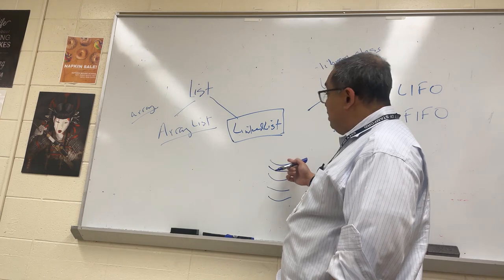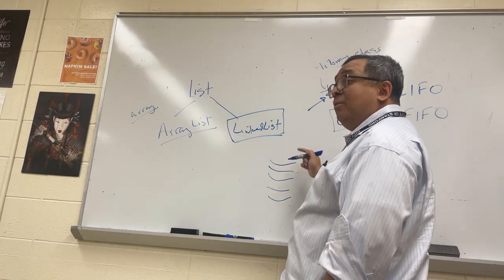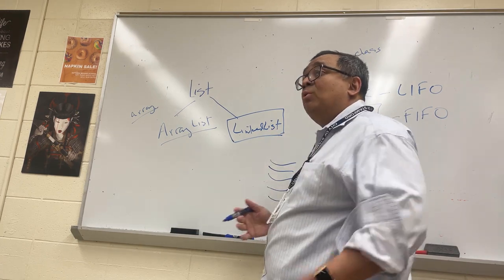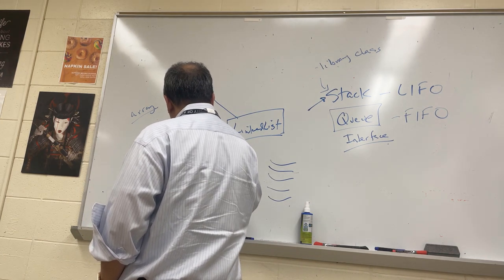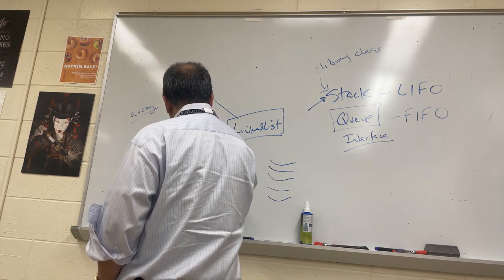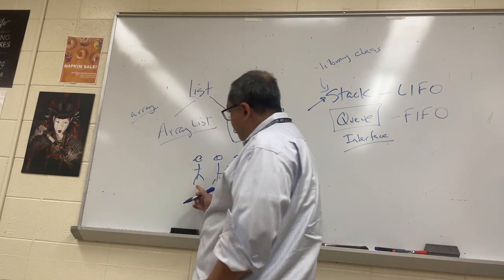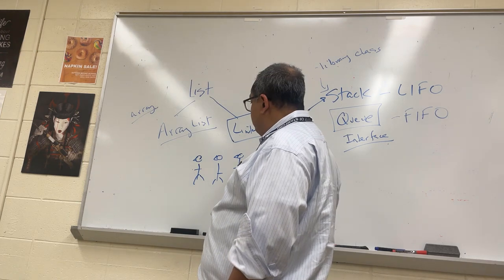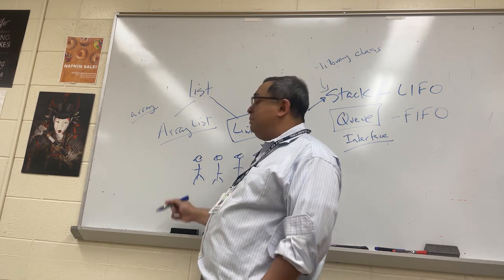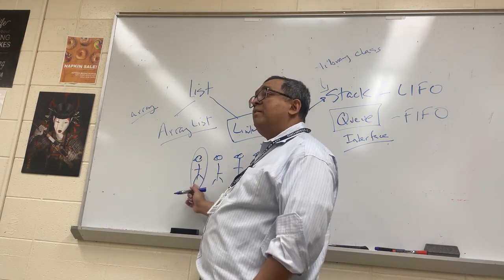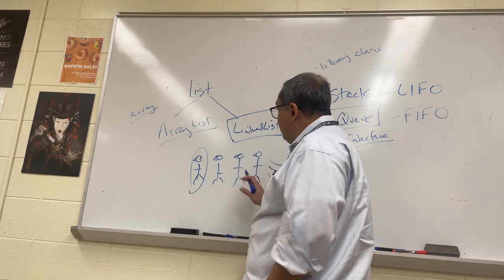Unlike the stack — which you can think of as a stack of dishes where you put a dish on top and then next time you need a dish you take the one off the top, last in first out — the queue or linked list is different. It's more like a line. Imagine people lining up; I'll put their noses in so you can see what direction they're facing. This would be the front of the queue and this is the back. If someone wants to join the queue they join from the back.